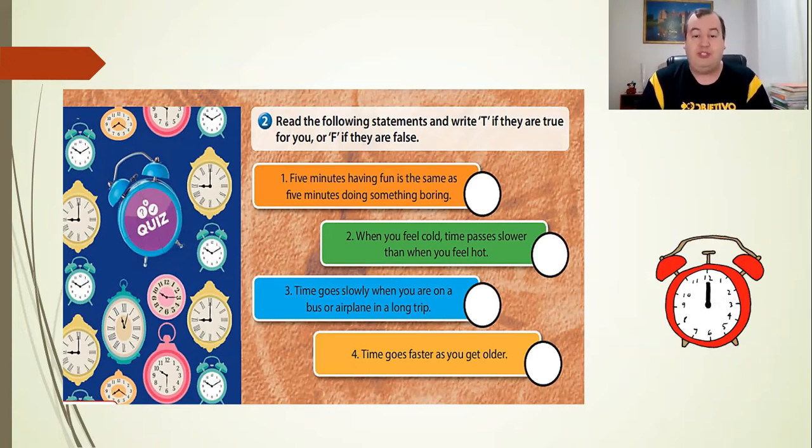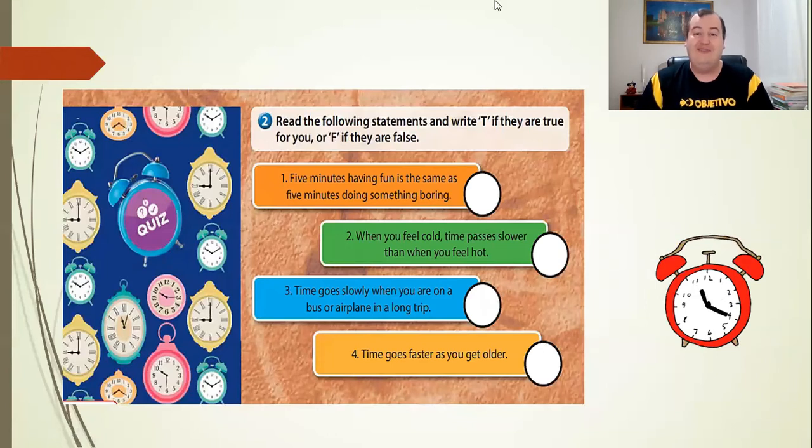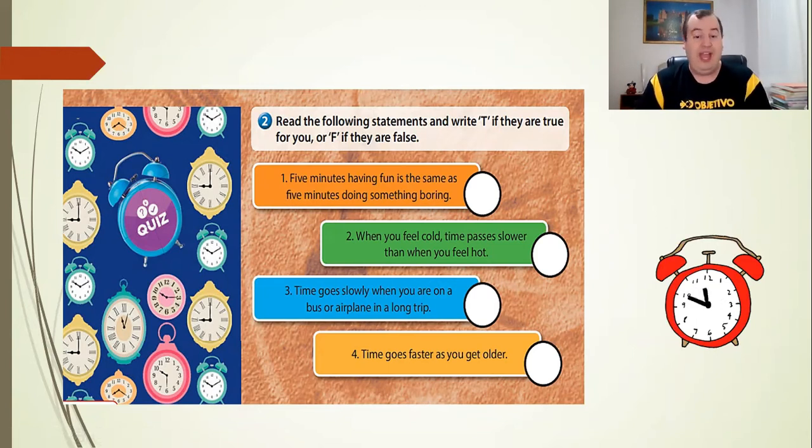Number three. Time goes slowly. When you are on a bus or airplane in a long trip. True or false? What is your perception about this? Time goes slowly. It goes slowly. When you are on a bus or airplane in a long trip. E aí, você vai fazer uma viagem longa. E aí, será que o tempo parece passar mais devagar? True or false? What is your perception about this? I think it's true. Que a gente fica toda hora. Tá chegando? Vai demorar pra chegar? Onde que estamos que não chega nunca? Então, I think it's true.